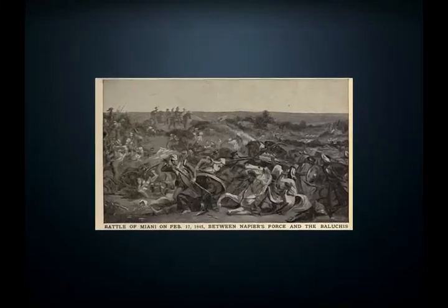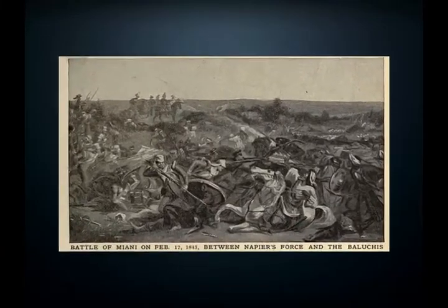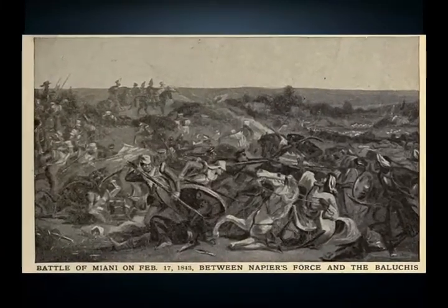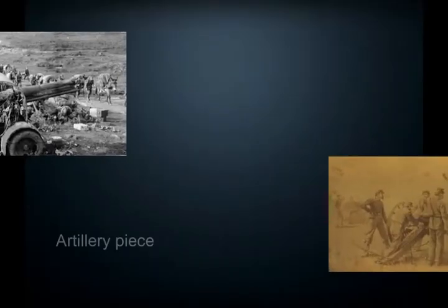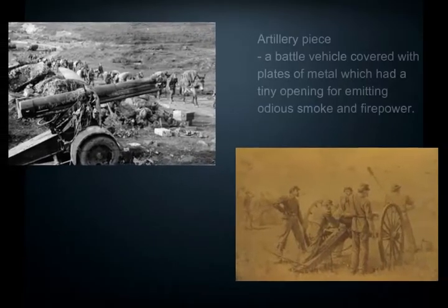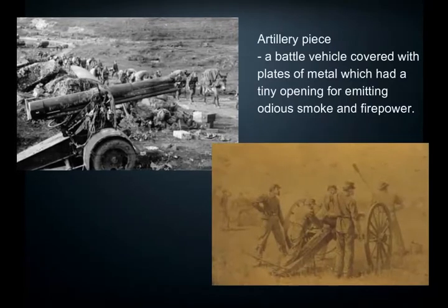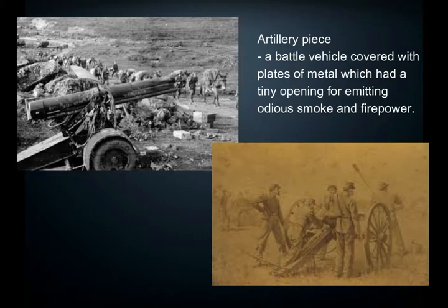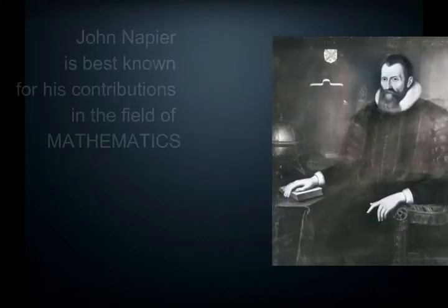Napier also invented different kinds of weapons in case there was a war with Catholic Spain. The weapons included an artillery piece, a type of battle vehicle driven by men inside and covered with plates of metal, which had tiny openings for emitting smoke and firepower, and two kinds of mirrors for setting fire to enemy ships.